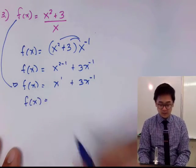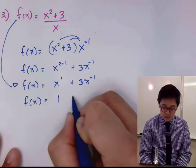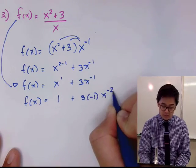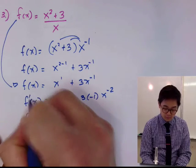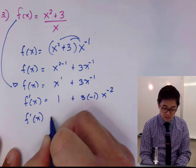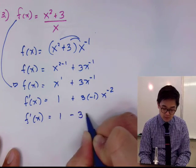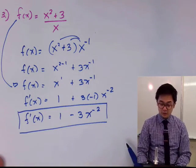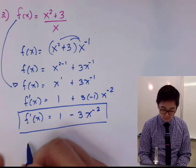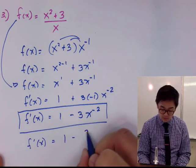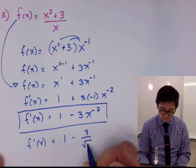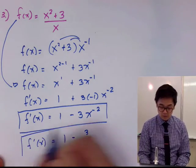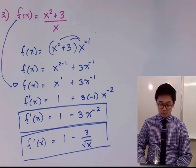So f prime of x equals the derivative of x, which is 1, plus the derivative of 3x to the negative 1, which is 3 times negative 1 times x to the negative 2. Therefore f prime of x is 1 minus 3x to the negative 2, which can also be written as 1 minus 3 over x squared.